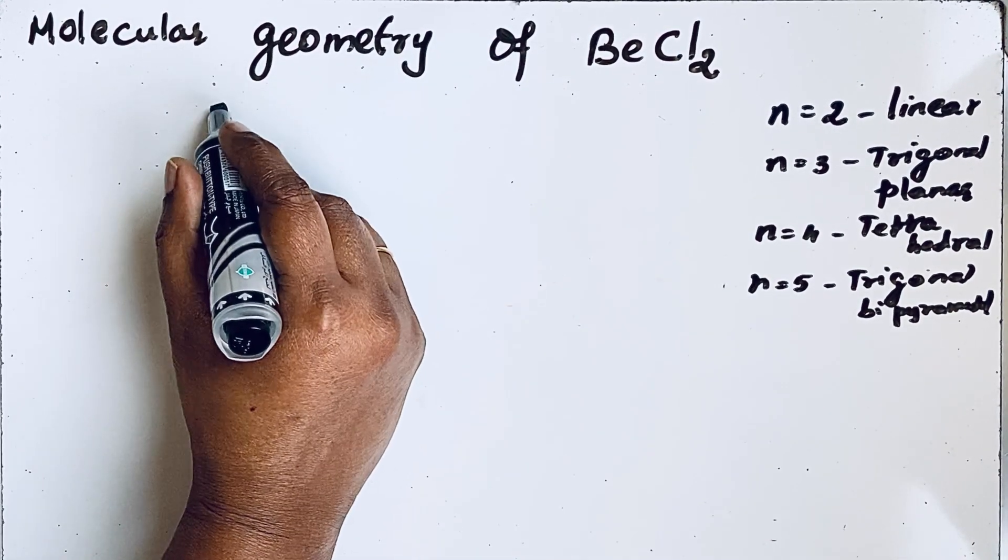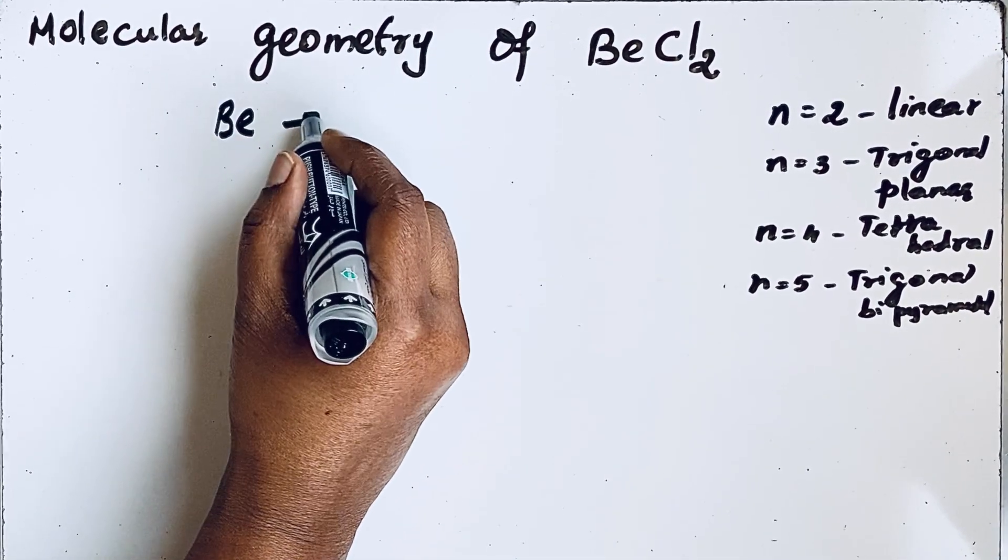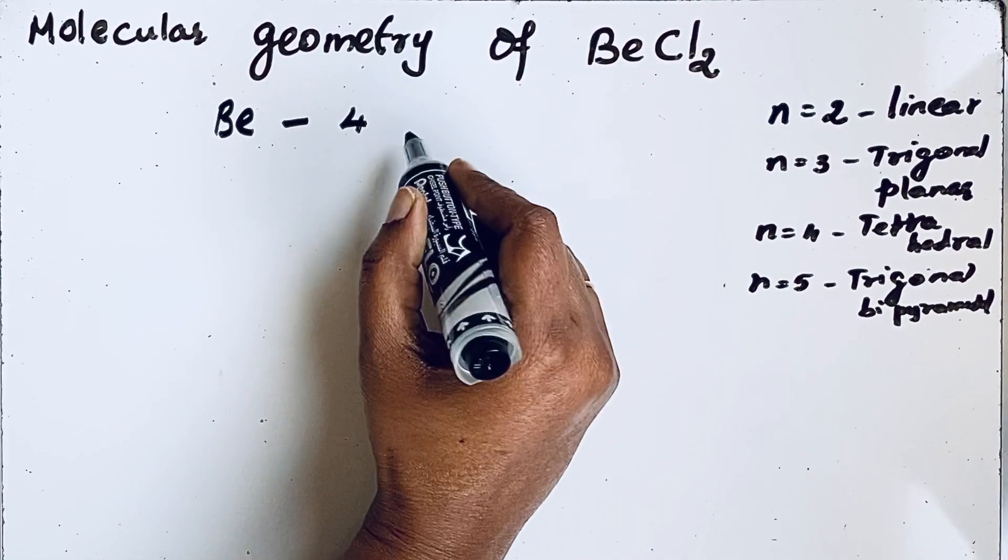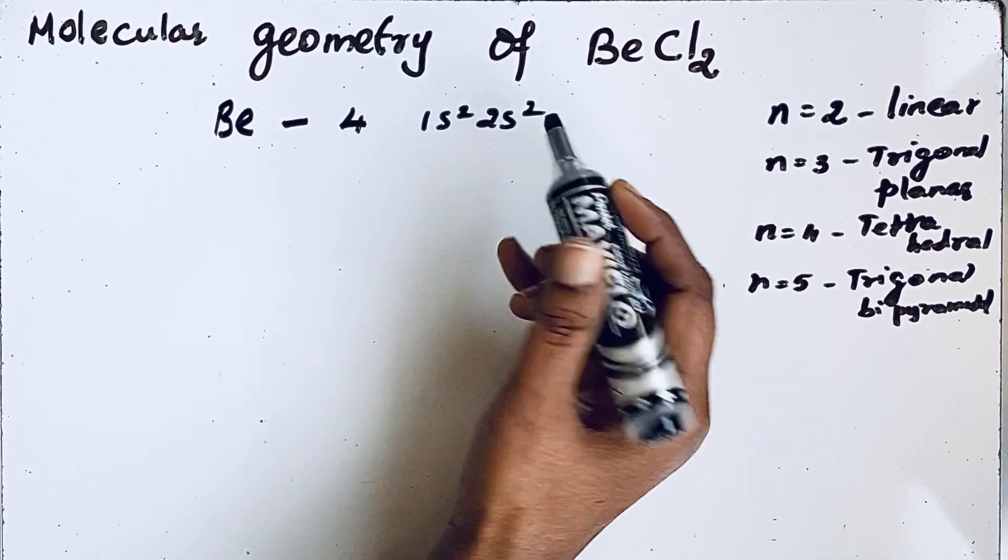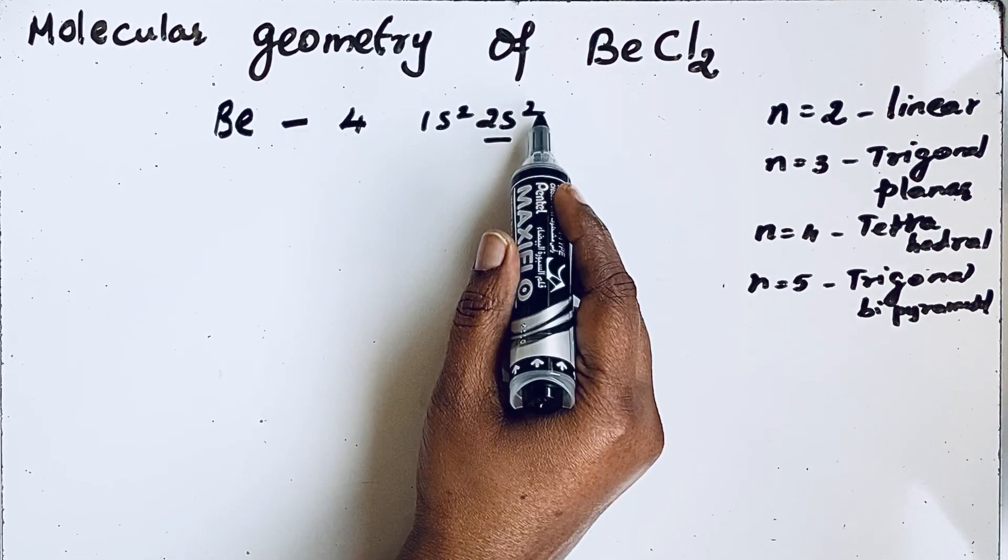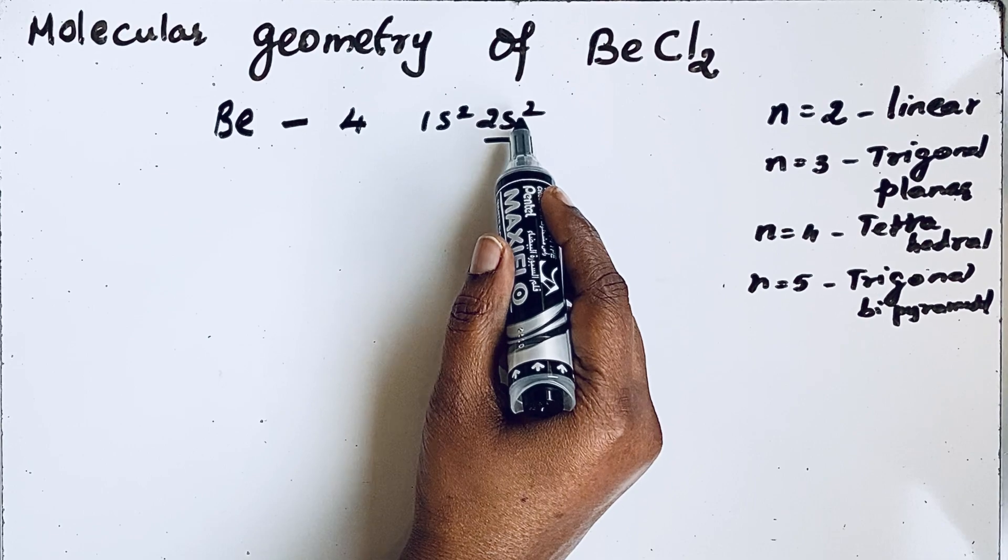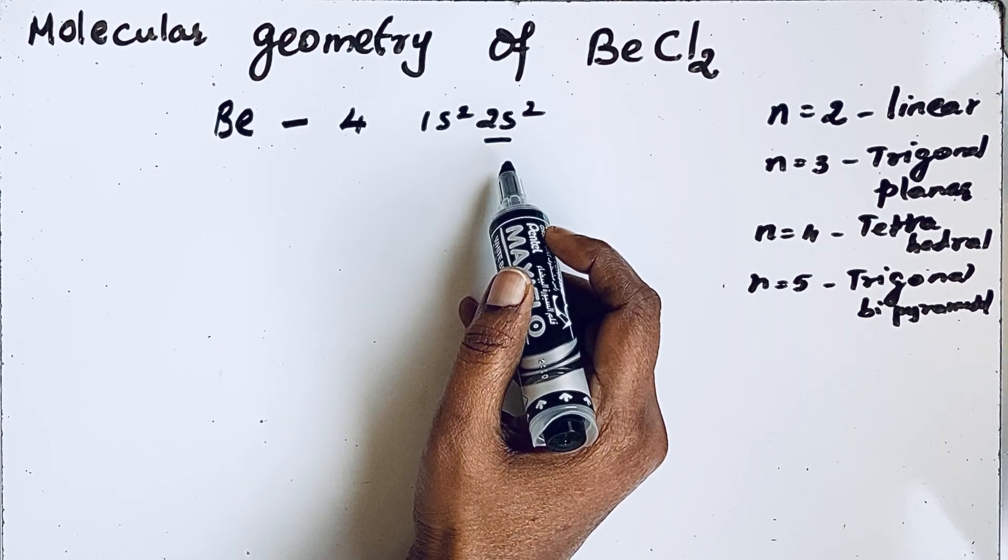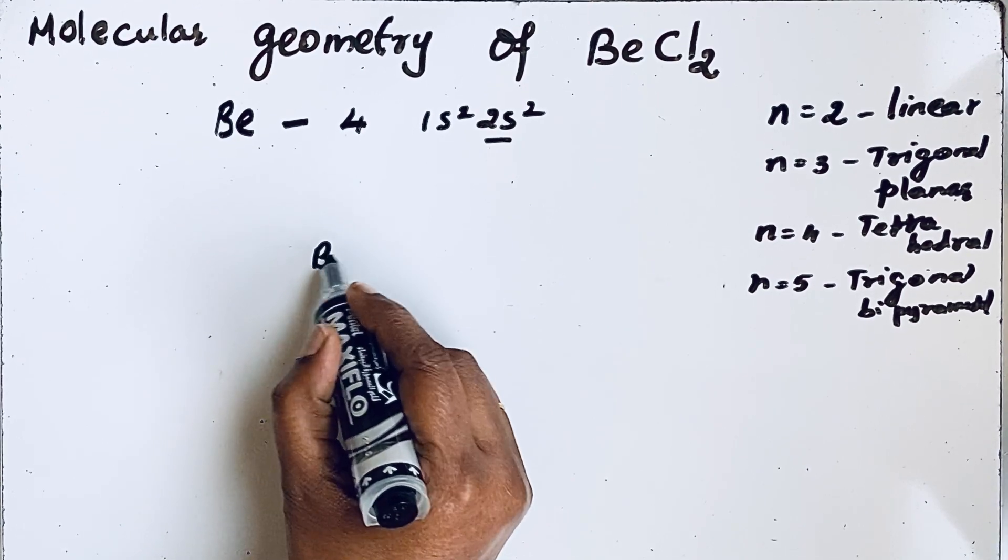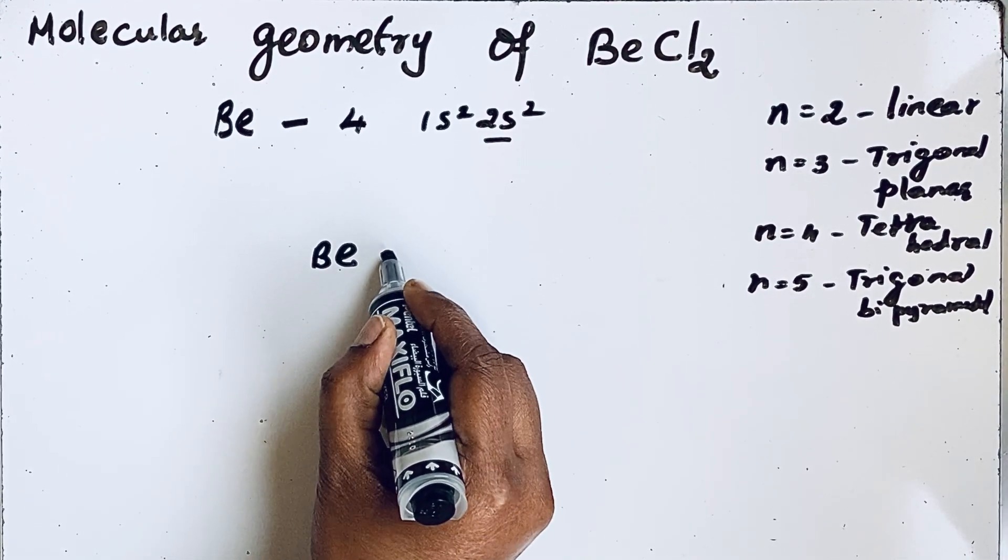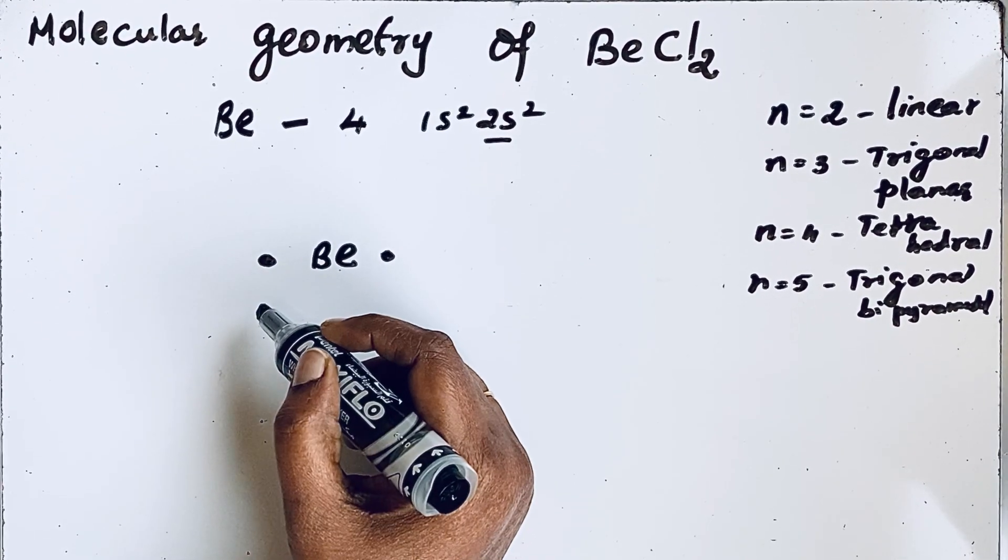So beryllium is the central atom; its atomic number is 4. From that, we can write the electronic configuration: 1s² 2s². So there are two valence electrons in the central beryllium atom. We can show this in the form of Lewis dot structure with beryllium having 2 electrons.